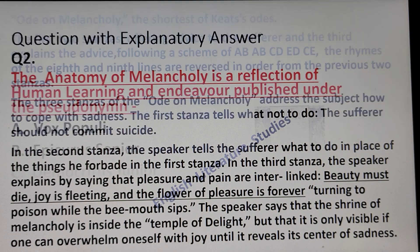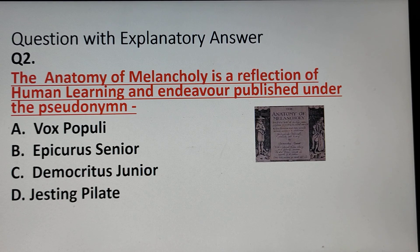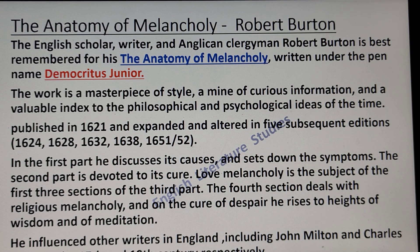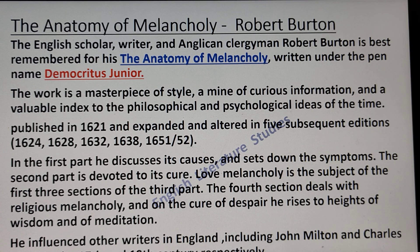Question number two: 'The Anatomy of Melancholy is a reflection of human learning and endeavor, published under the pseudonym' — four options are given. My answer is: The Anatomy of Melancholy was written by Robert Burton, an English scholar, writer, and Anglican clergyman. Burton is best remembered for this work, written under the pen name Democritus Jr. This work is a masterpiece of style, a mine of curious information, and a valuable index to the philosophical and psychological ideas of the time. It was published in 1621 and expanded in five subsequent editions.